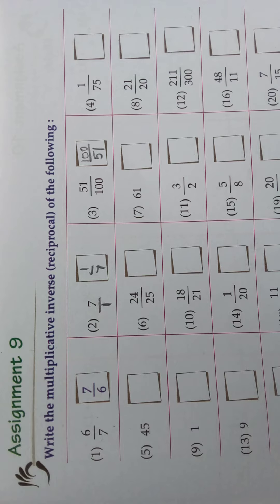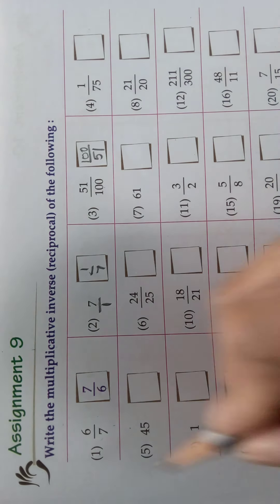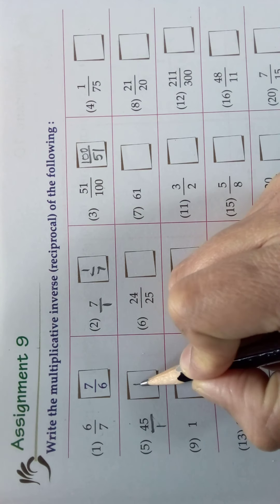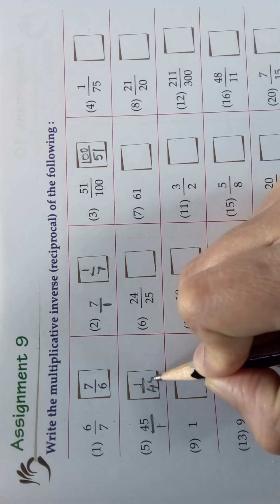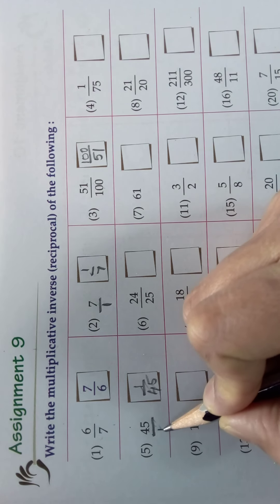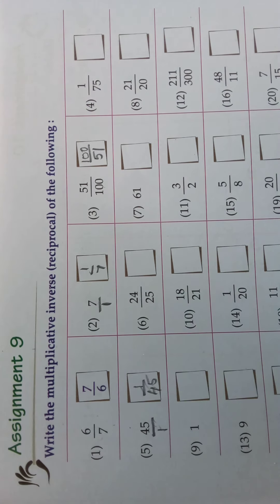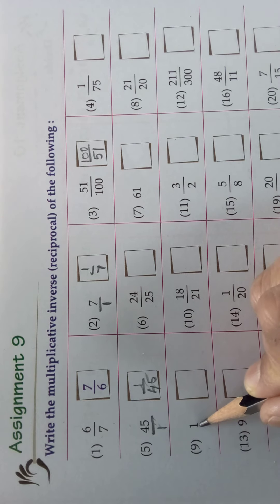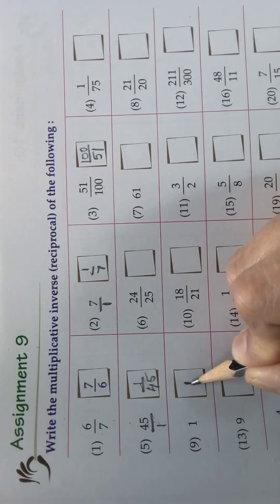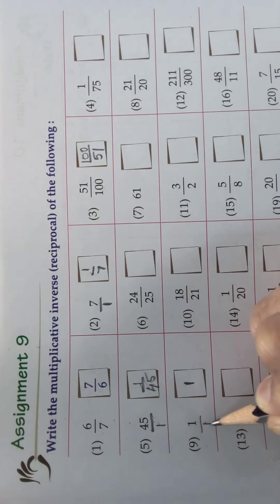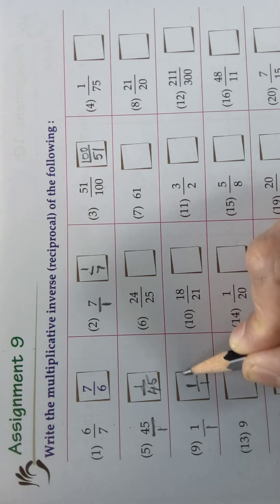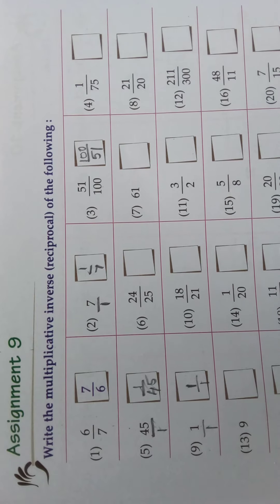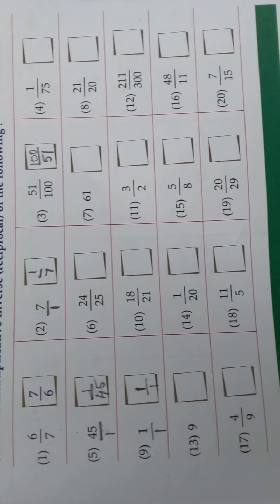Understood? In this way you should write the answers. For the 5th sum: 45 — the inverse is 1/45, because if nothing is in the denominator, you consider it as 1. For the 9th one: the inverse of 1 is 1, because 1/1 × 1/1 = 1. In this way you should do the remaining sums.